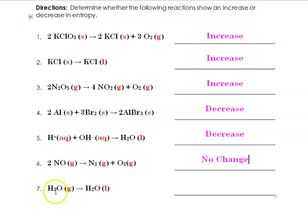And then number 7, we have water in its gas phase going to water in its liquid phase. This would be a condensation. So this would be a phase change, and again, going from disorder to more order. So this would be a decrease in randomness.